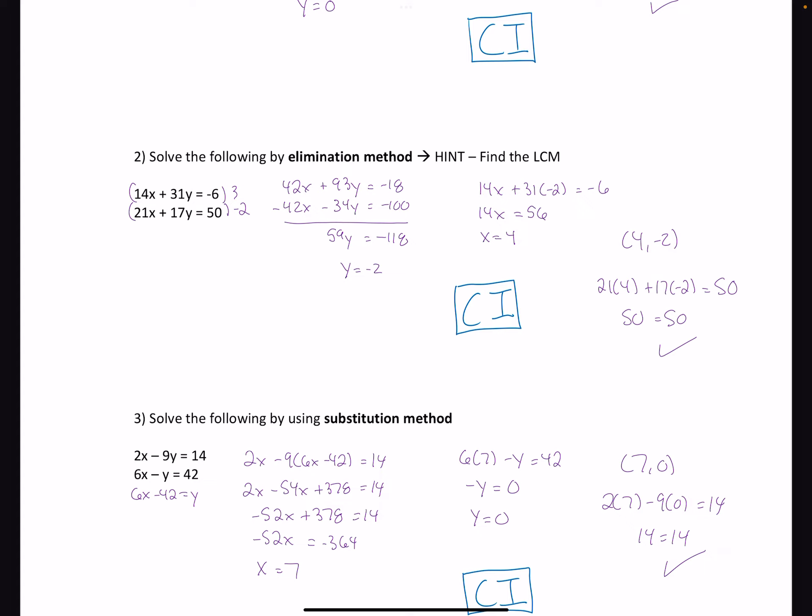So I multiplied my top equation by 3, my bottom equation by negative 2, did our normal elimination method, but kept the numbers manageable. So don't always just multiply by the numbers you see. Find that least common multiple to keep the numbers manageable.